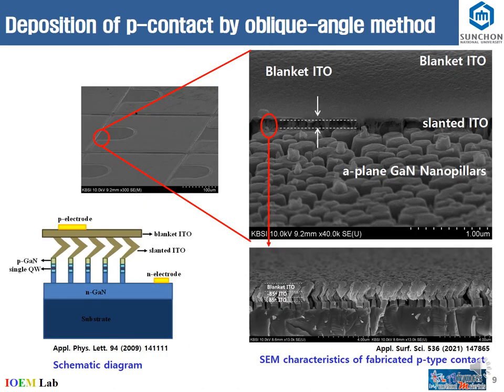For fabrication of the P-contact by oblique angle method: we fabricated our P-contact using the oblique angle method, the schematic diagram of which is shown here. In the SEM figure, we can clearly see there are two layers: slanted ITO and blanket ITO. In the magnified figure, we can see that the slanted ITO layer uniformly deposits on each nanopillar, where we did not find any shorting of nanopillars during deposition of the P-contact. The blanket ITO layer is used to uniformly inject the current into the nanopillars through the slanted ITO layer.